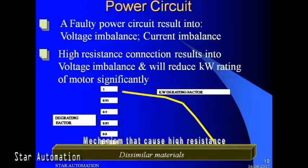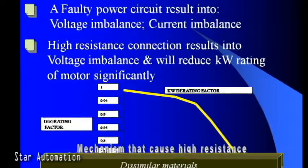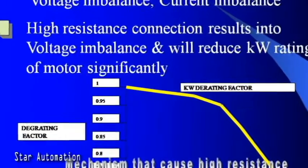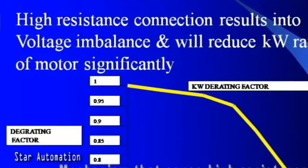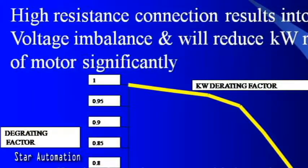A faulty power circuit results in voltage unbalance. Electrical equipment, especially motors and air controllers, will not operate reliably on unbalanced voltages. In a three-phase system, the difference between the highest and lowest voltages should generally not exceed four percent of the lowest voltage. Greater imbalances may cause overheating of components, especially motors, and intermittent shutdown of motor controllers.